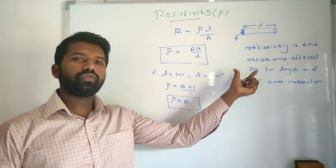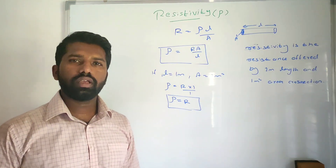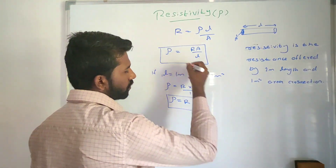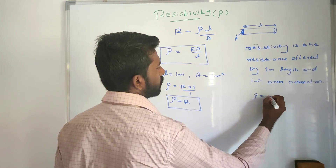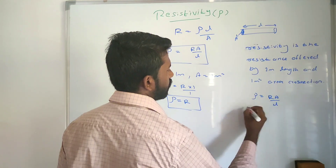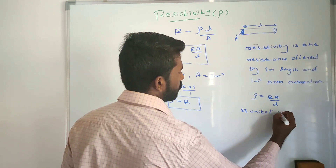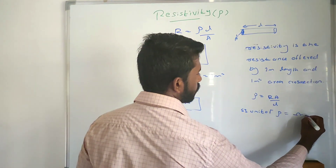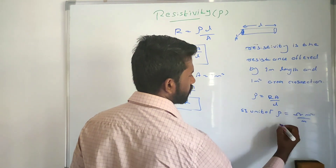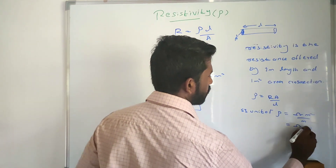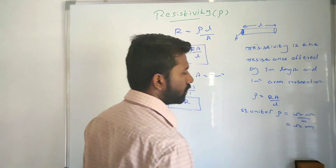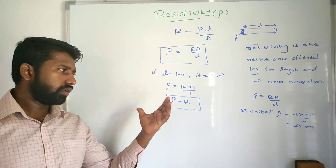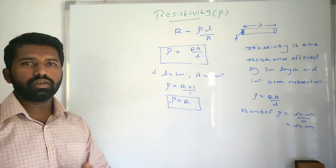Resistivity is the resistance offered by 1 meter length and 1 meter square area cross-section. The SI unit of rho: the formula is rho equals R times A by L. Resistance unit is ohm, area cross-section is meter squared, and length unit is meter — the meters cancel, so what we get is ohm meter. The resistivity unit is ohm meter.